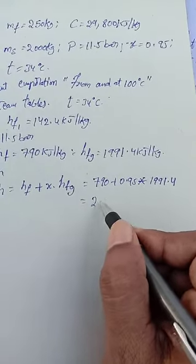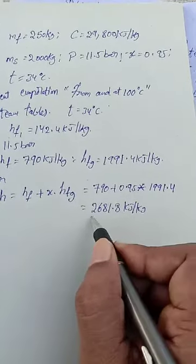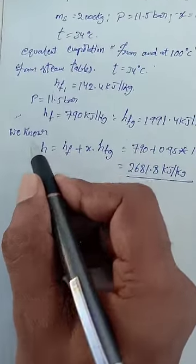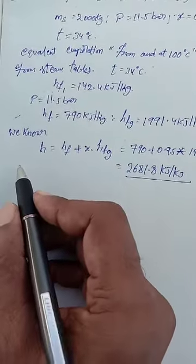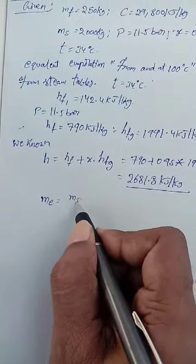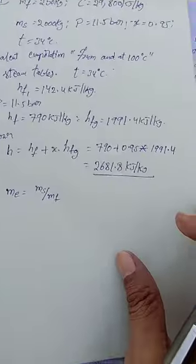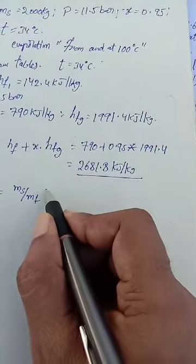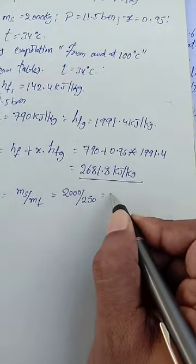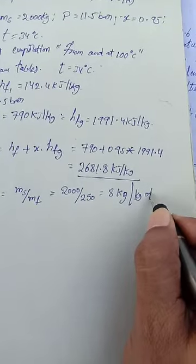Now calculating this, we get the enthalpy or total heat in kilojoules per kg. Next, the mass of water evaporated per kg of coal: Me = MS divided by MF. Substituting the values, Me = 2000 divided by 250, which gives 8 kg per kg of coal.